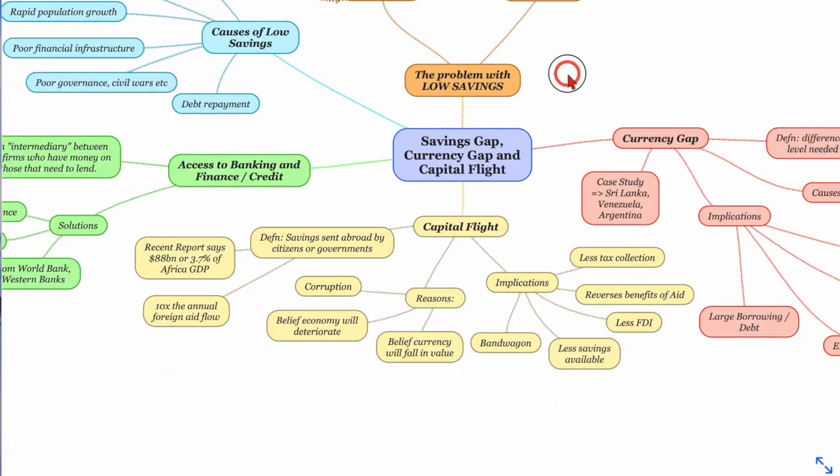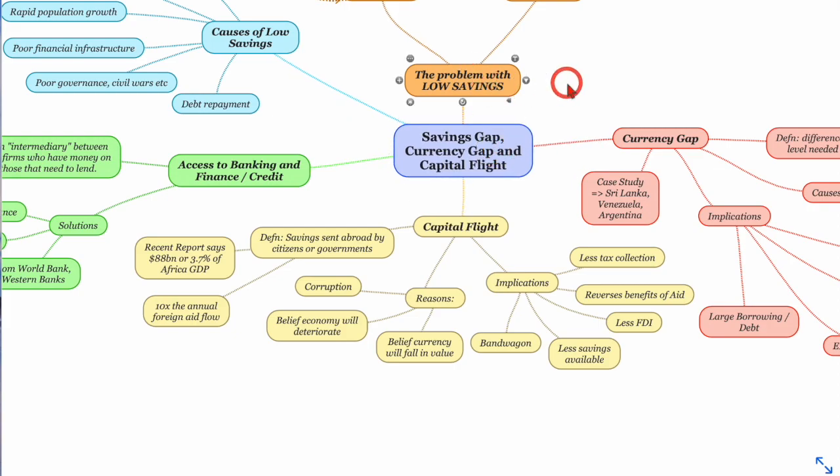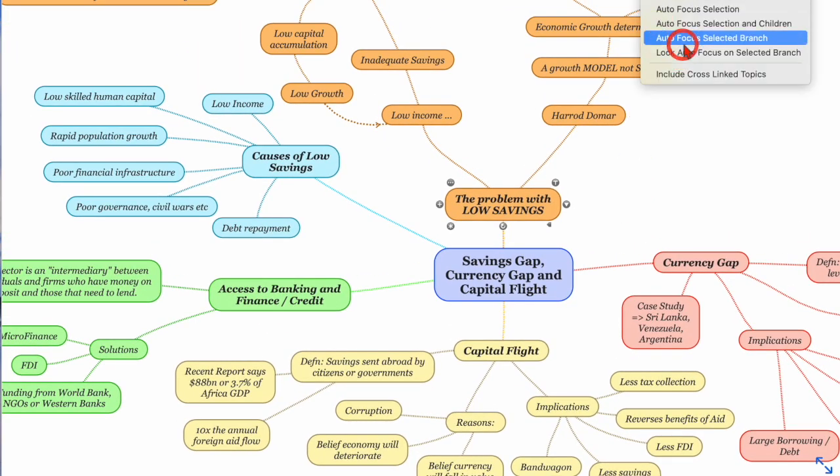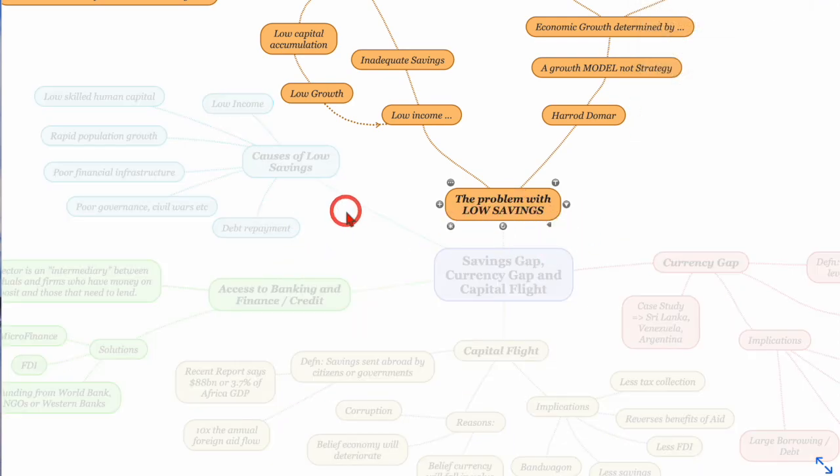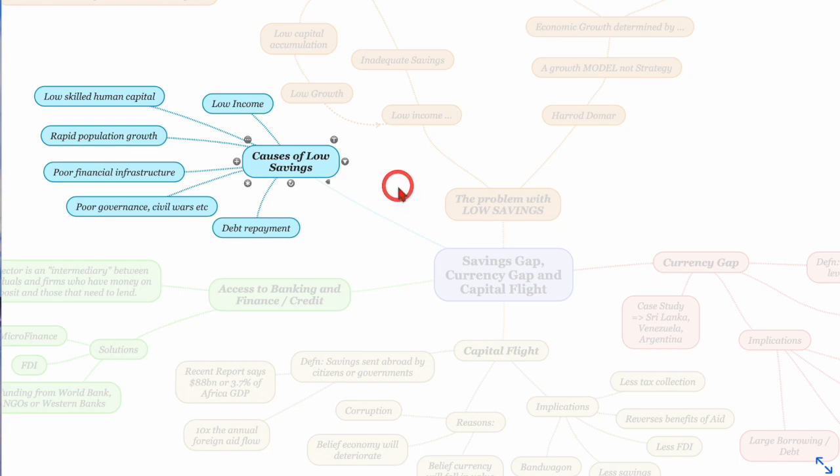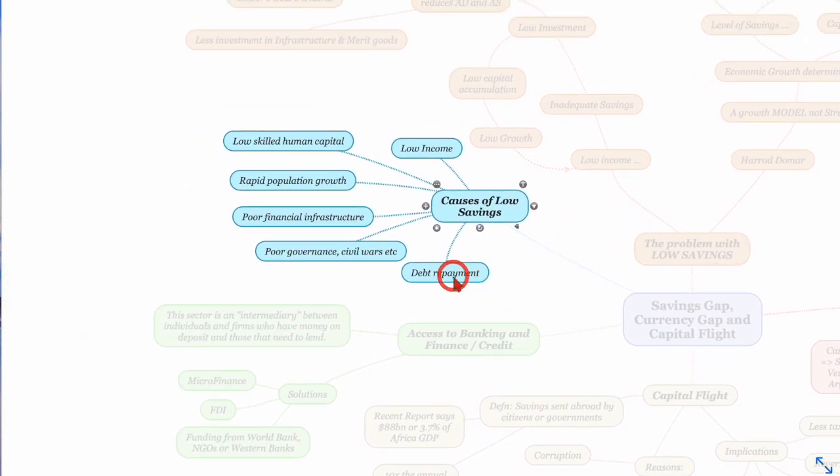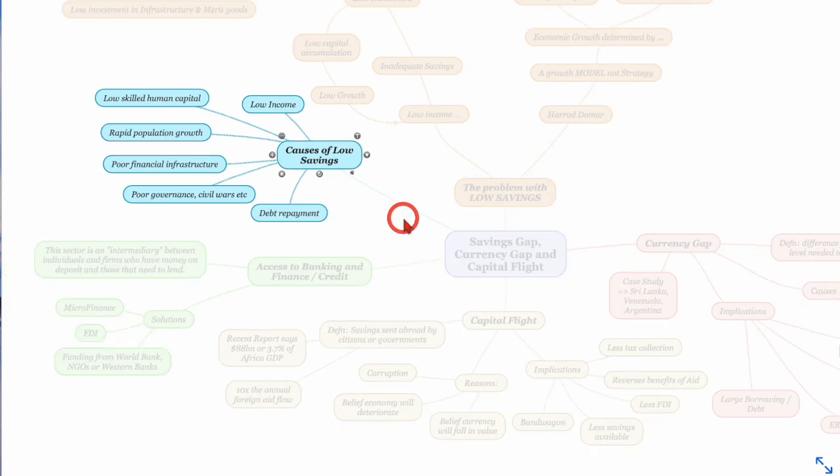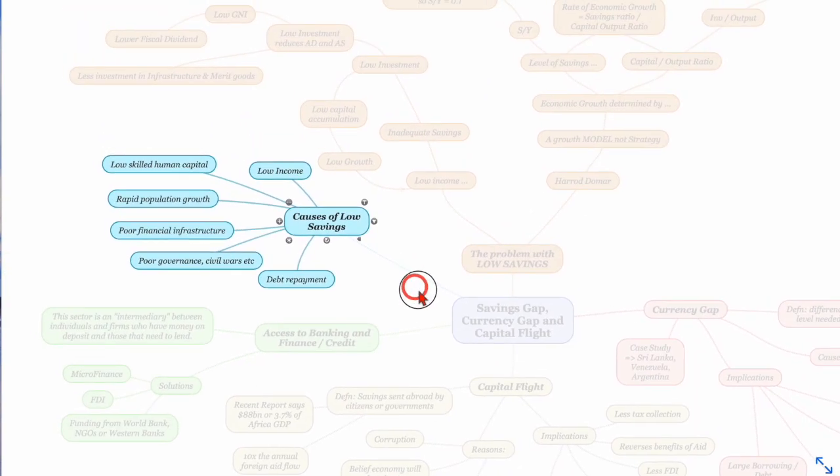So the first thing that we really need to look at here is this problem of having low savings. And let's just look initially at what are the causes of this problem of low savings. Things like you've got low incomes in your economy, you haven't got much skilled human capital so their earnings aren't very high, population is growing rapidly so it's difficult to save, you've got to keep spending, poor financial infrastructure, governance and civil wars and debt repayment as well. So if the country's borrowed in the past then they can't actually save anything, they've got to use any income generated in order to pay off past debts.